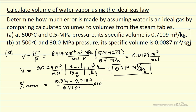Multiplying by 10 squared to get the percent, I get 0.44% error. So the steam tables and the ideal gas law are not that different at this pressure of 0.5 megapascals.